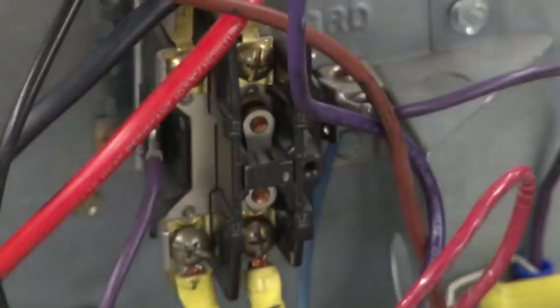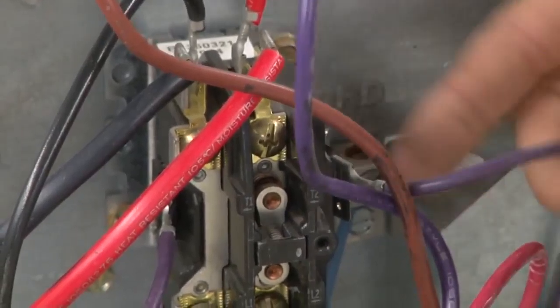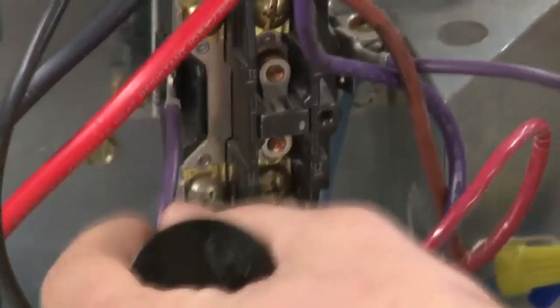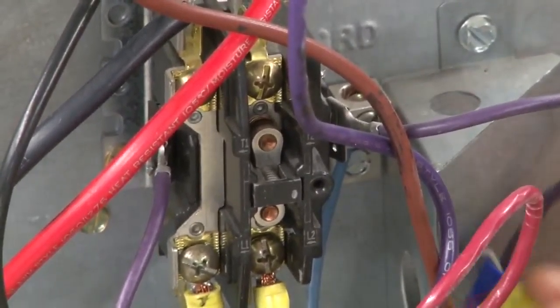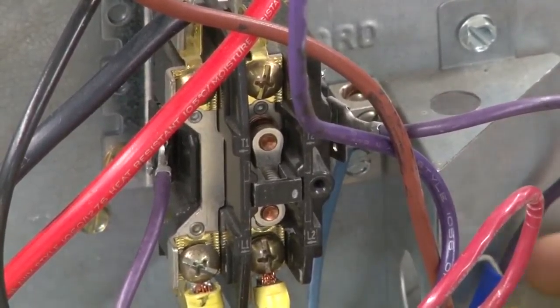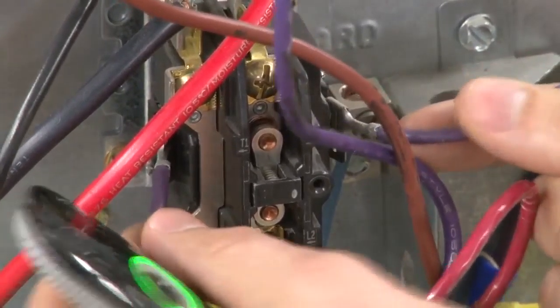This little device down here is your contactor. It's got a coil that is 24 volts that runs inside to your thermostat. So when your thermostat calls, this coil energizes,